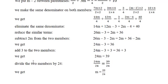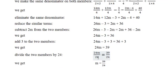Add 3 to both members: 24m minus 3 plus 3 equal to 36 plus 3, giving 24m equal to 39. Now divide both members by the coefficient 24: 24m over 24 equal to 39 over 24.